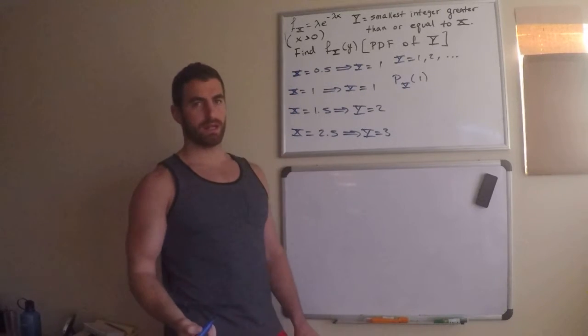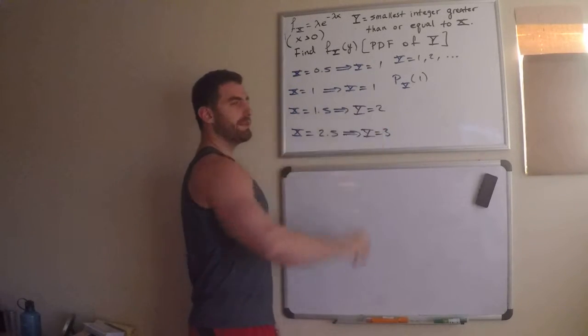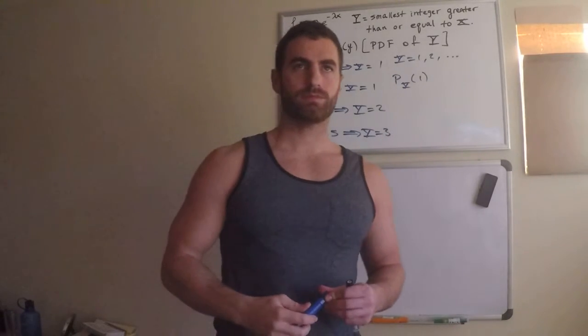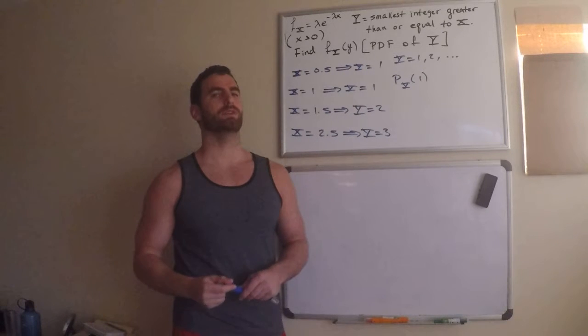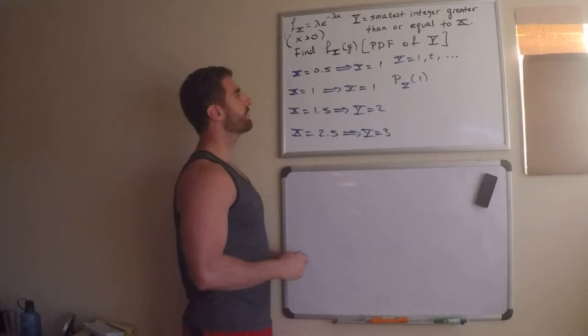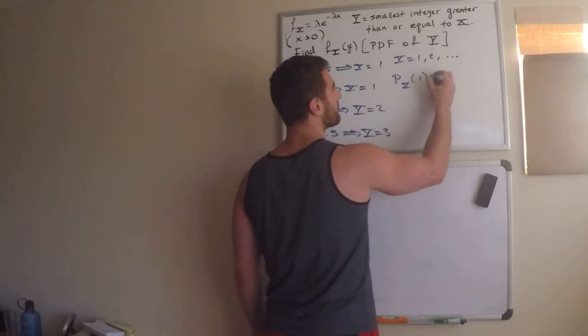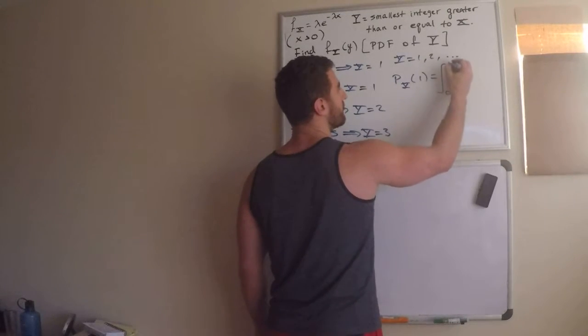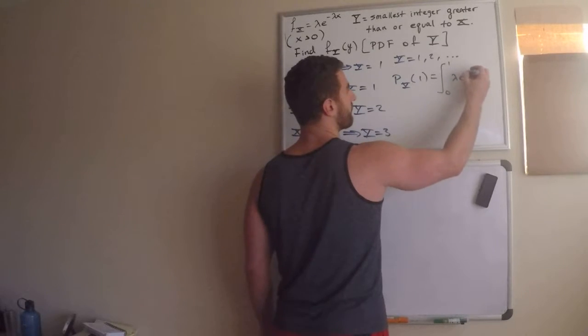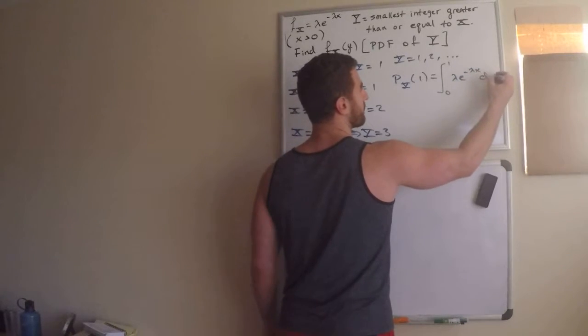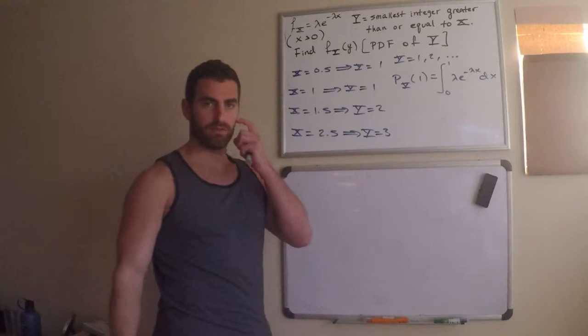So, I'm looking at a random variable y. When the probability of y is 1, what are the values of x can this happen for? This happens for x greater than 0, but less than 1. And I just need to integrate the PDF of x. So, that would be the probability that y is 1.